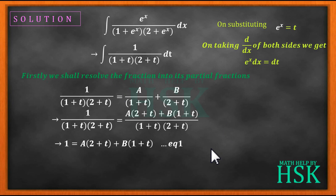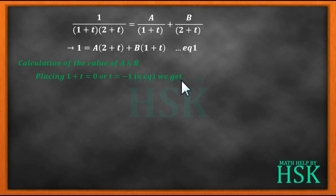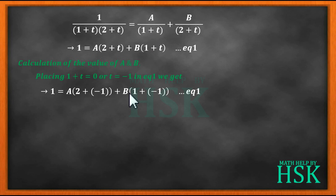To find A, substitute 1 + t = 0, i.e., t = −1, into equation 1. Always place the linear factor equal to zero to find the corresponding constant. Substituting t = −1: 1 = A(2 + (−1)) + B(1 + (−1)), the B term becomes 0, giving A = 1.